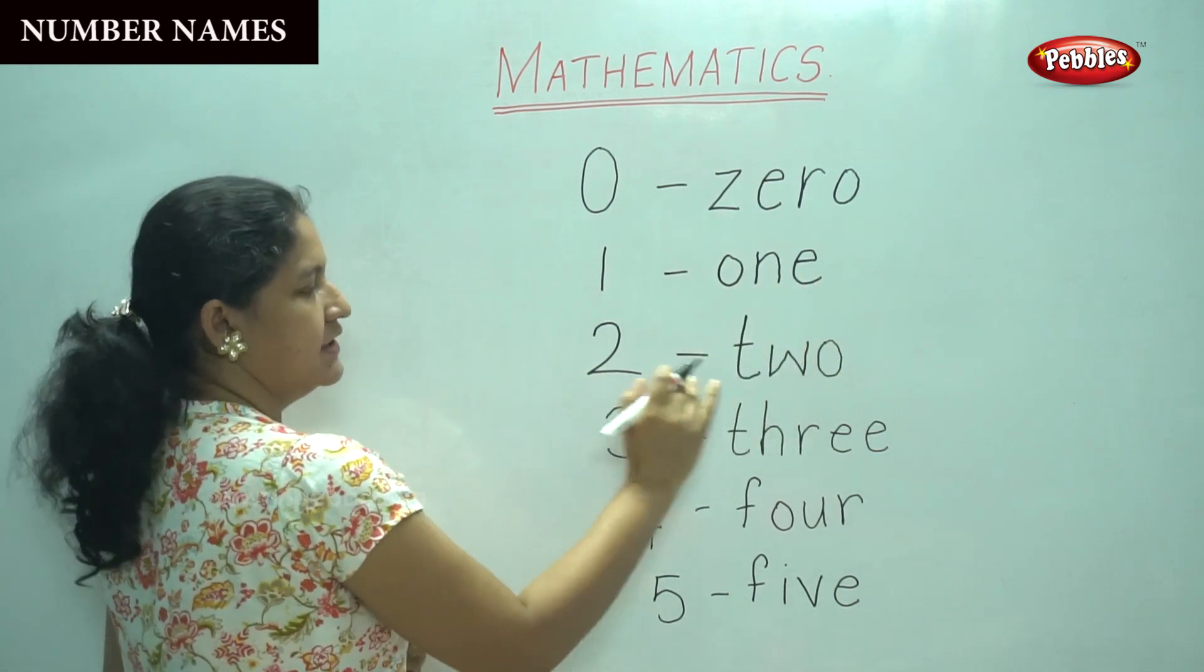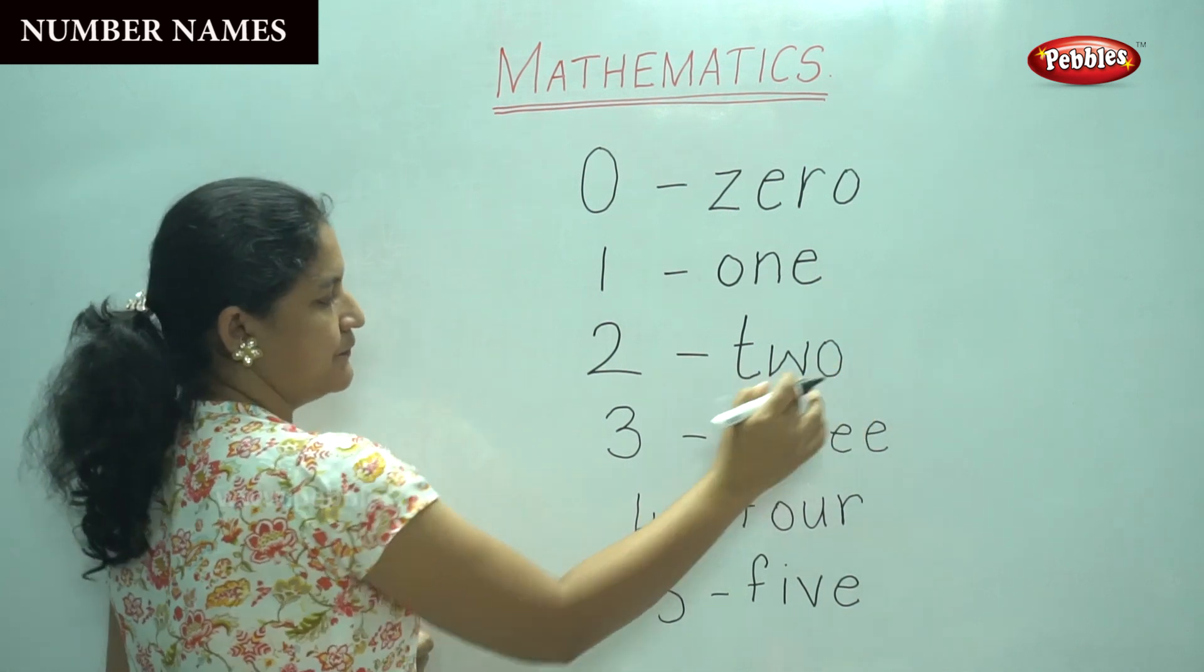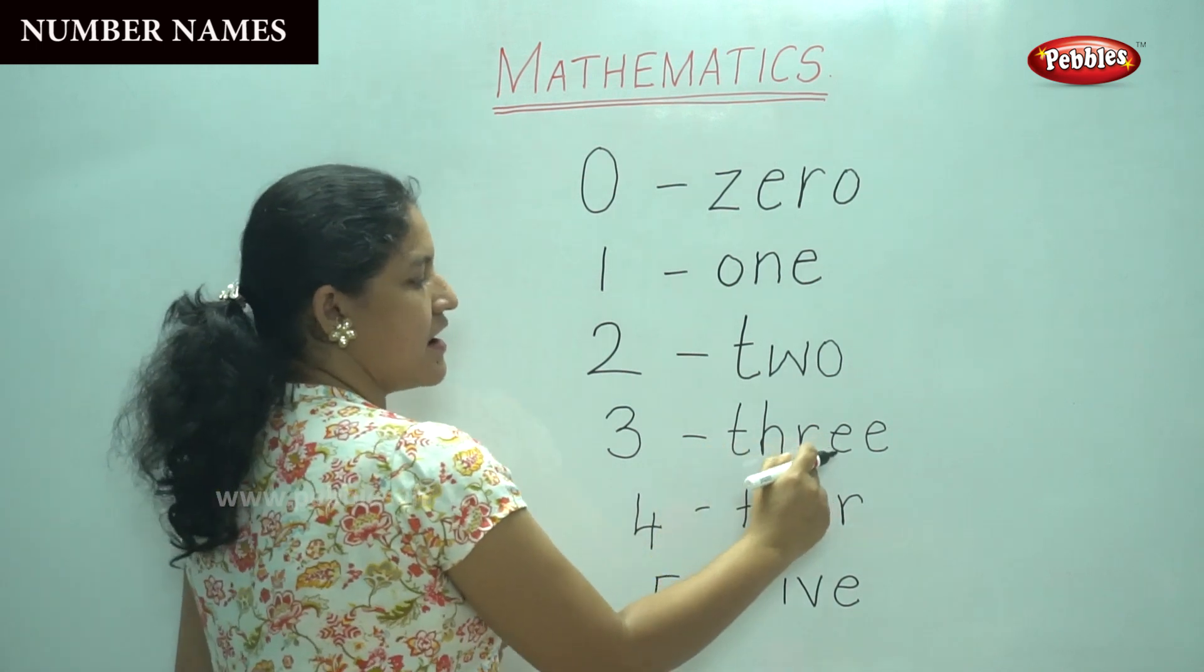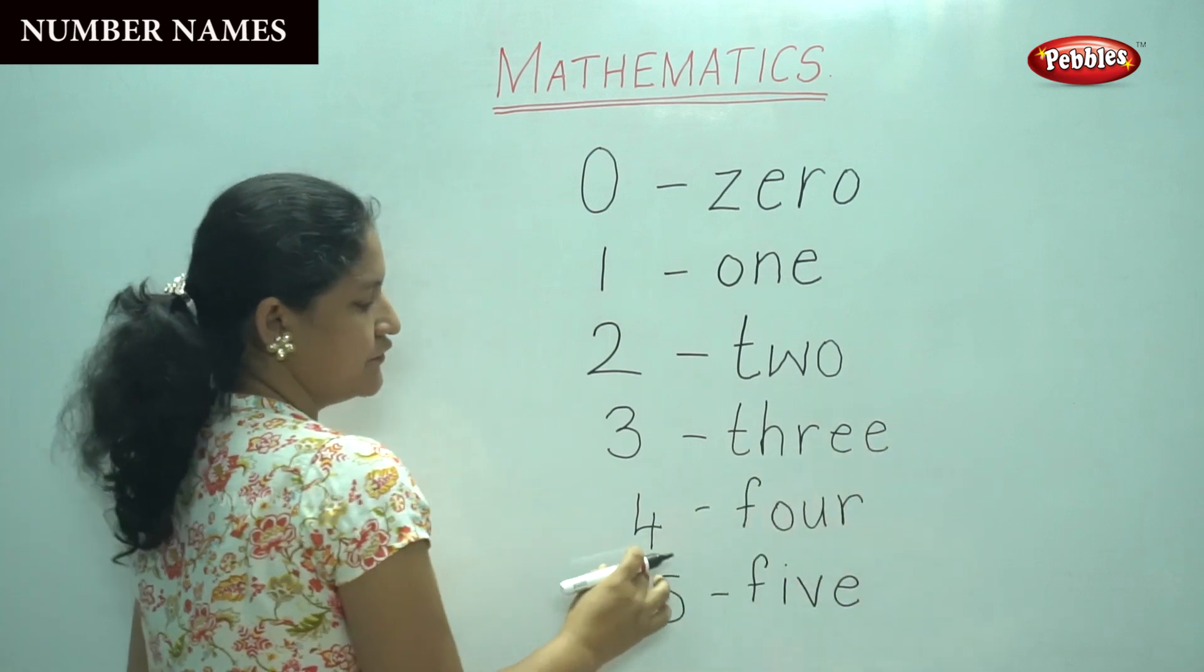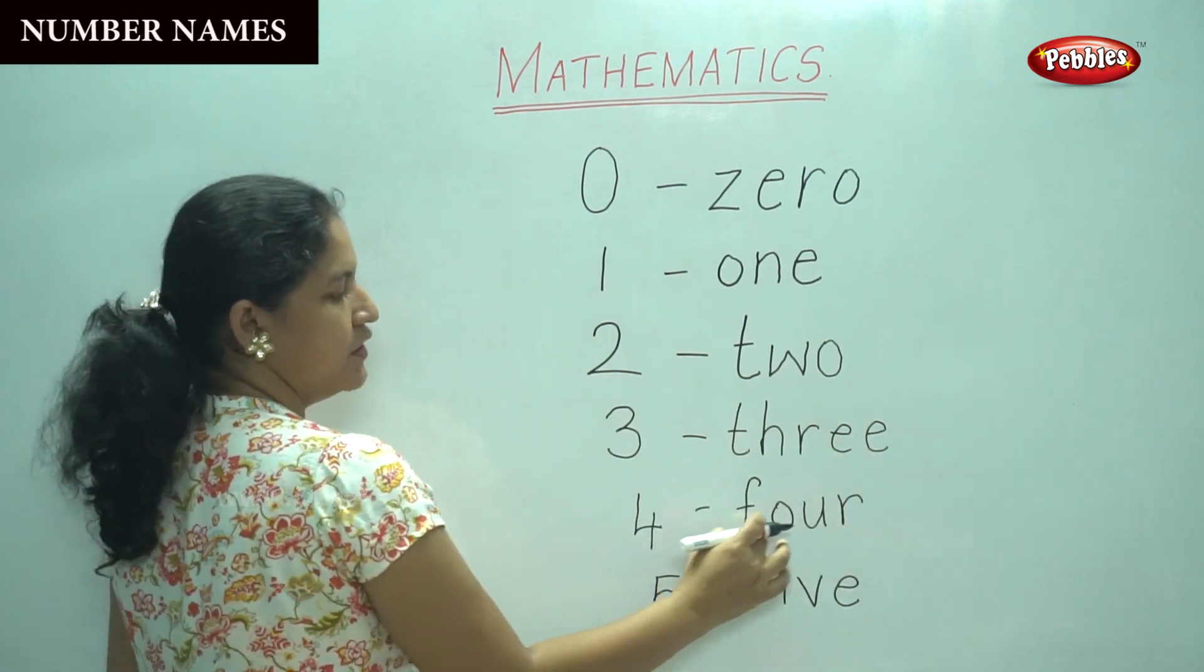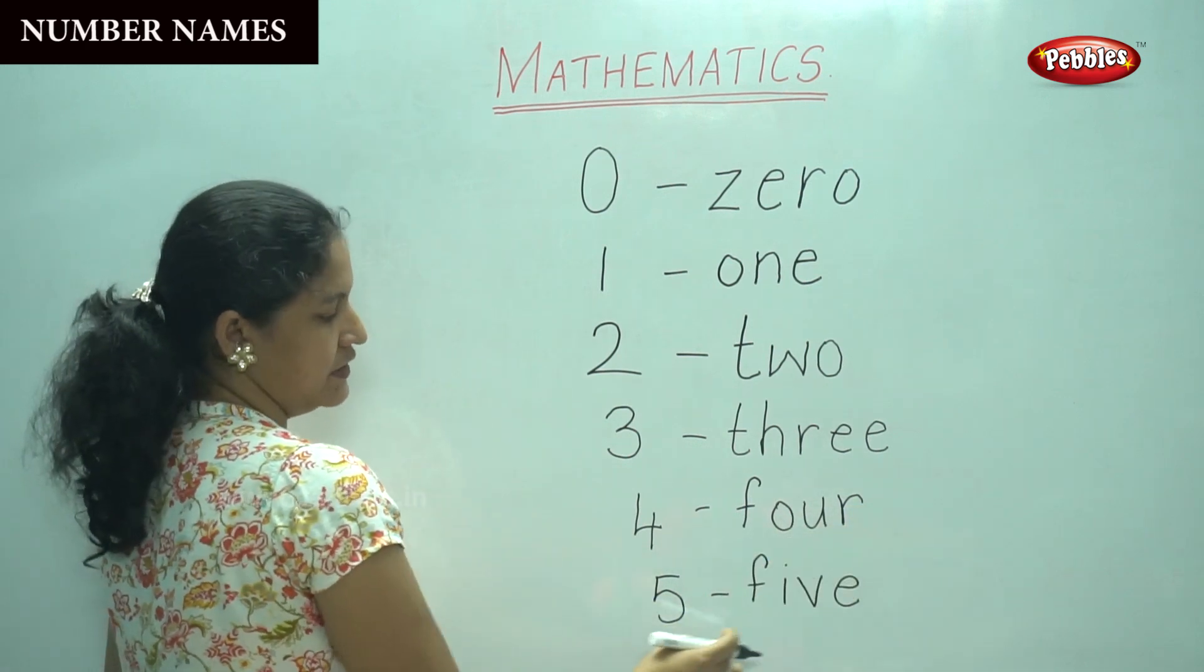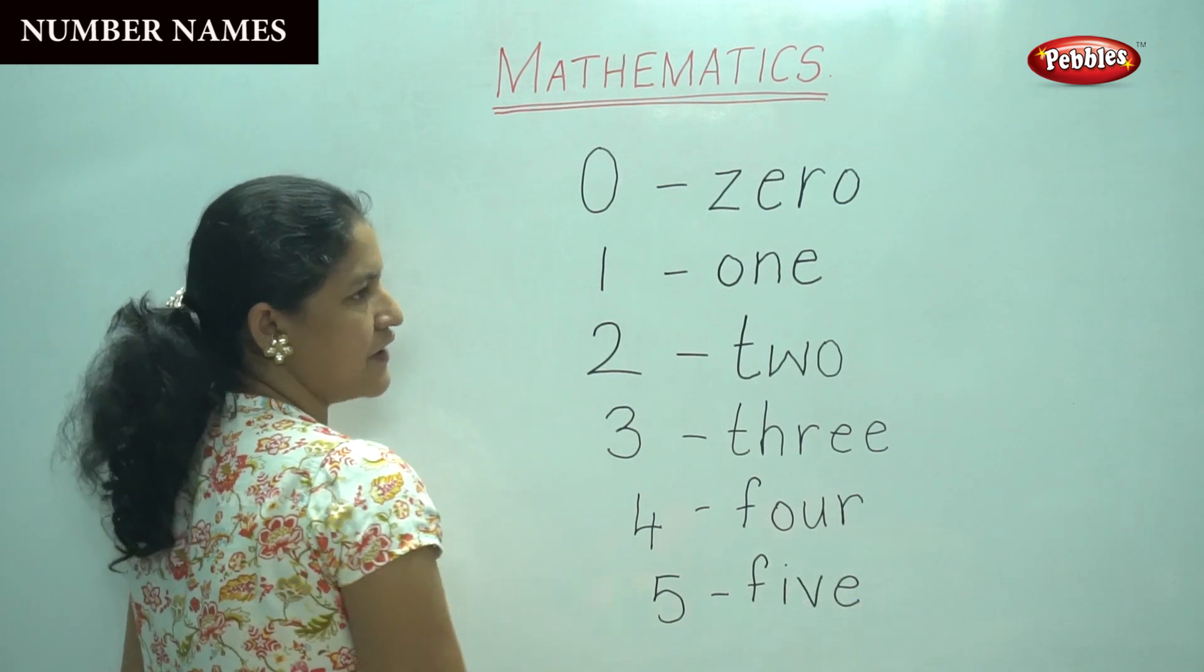For 2: T-W-O, 2. 3: T-H-R-E-E, 3. 4: F-O-U-R, 4. 5: F-I-V-E, 5.